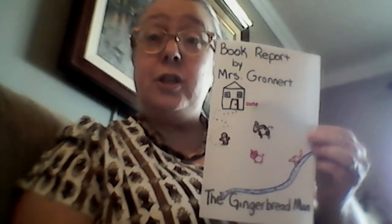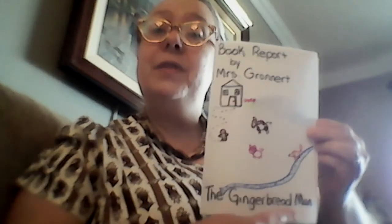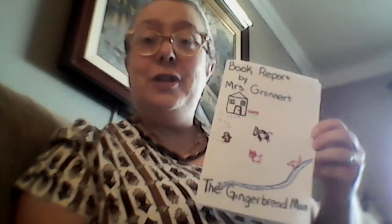The first two pages of your book report are finished. First page: 'Book Report' by Mrs. Gronert, the name of the story, and a picture of the story. Second page: Characters — make a list of the characters in the story. If you can, try to upload a picture of your work to send it to your teachers. Tomorrow we'll talk about what comes next. Bye bye.